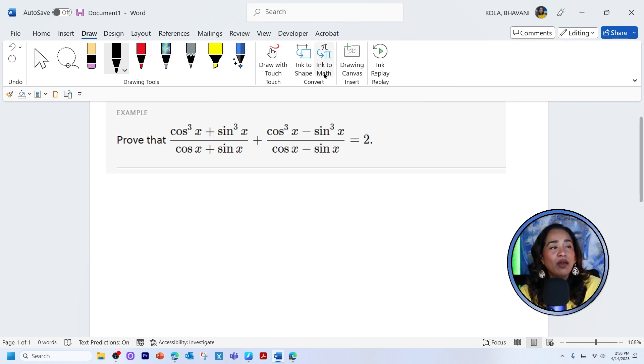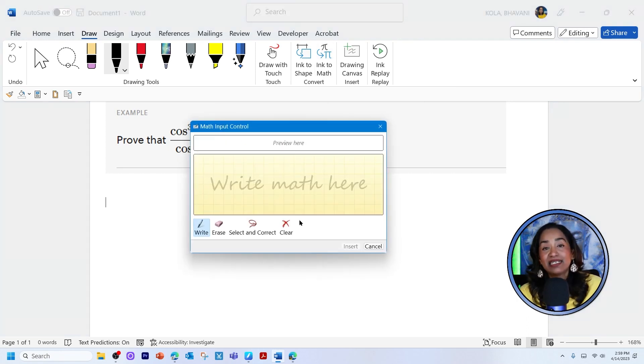Now, once I'm here, I'm going to click on ink to math. And as you can see, a math input control window pops up. You can preview your equation here. Let's go ahead and take a look at the options that we have. The write option is of course, when you're using your pen, you can go ahead and write your equation using a pen. The erase option lets you erase. The select and correct will let you select and correct the math equations and clear by default is clear.